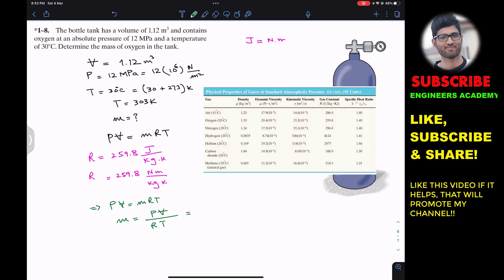The P value is 12 megapascal, which is 12 into 10 raised to power 6 newton per meter square, multiplied by the volume value 1.12 meter cube, divided by the R value which is 259.8 newton meter per kilogram Kelvin, and multiplied by the temperature value which is 303 Kelvin.